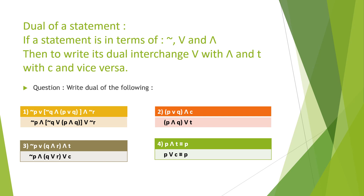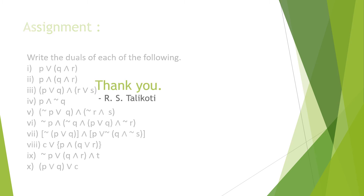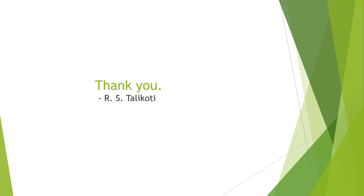Similarly for the fourth statement: P ∧ tautology is logically equivalent to P, and its dual P ∨ contradiction is logically equivalent to P. This is your assignment — write duals of the following statements. Thank you, I will see you in the next video.